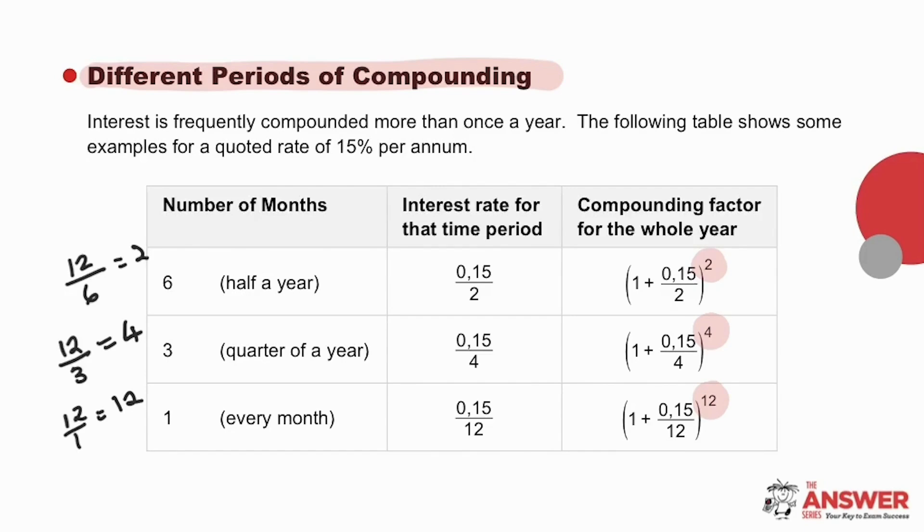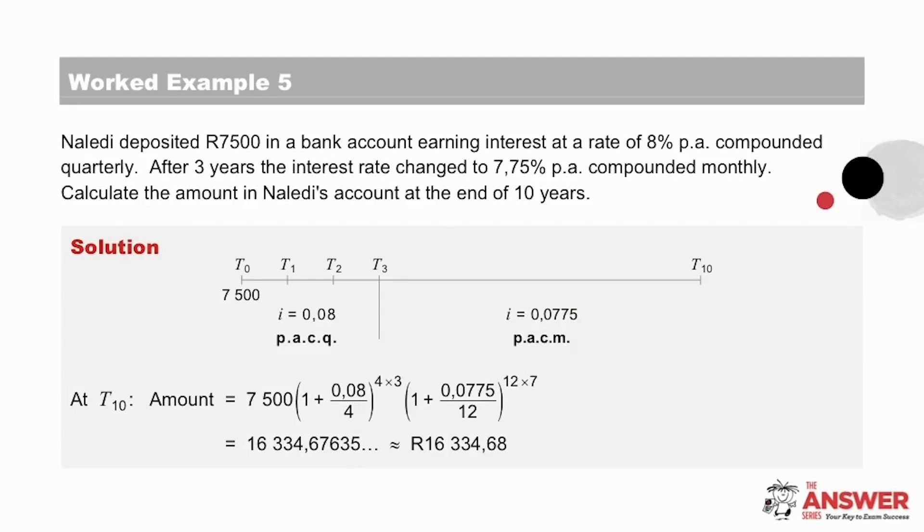Let us now have a look at some examples. In this example, Naledi deposits 7,500 rand into a bank account. It earns interest at 8% per annum, compounded quarterly. And then after three years, this interest rate changes to 7.75% per annum, compounded monthly. They are asking us to find the amount in Naledi's account at the end of 10 years.